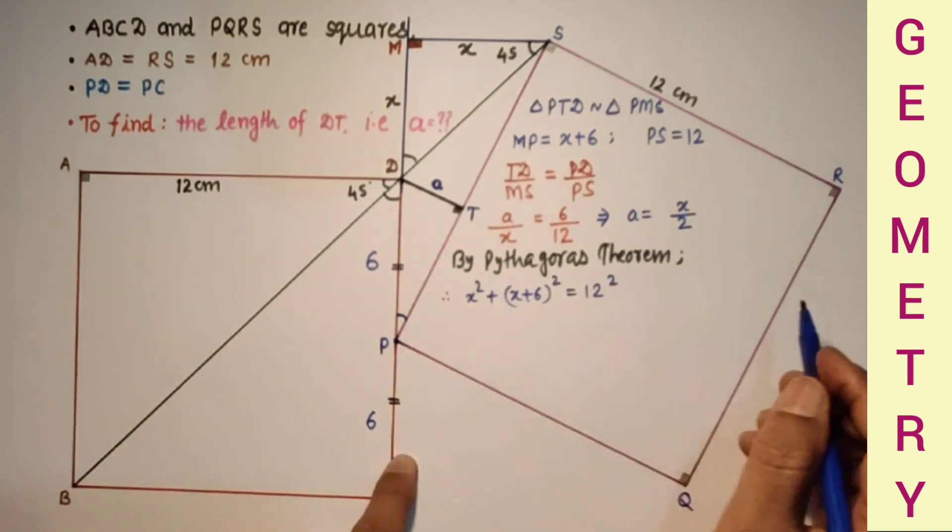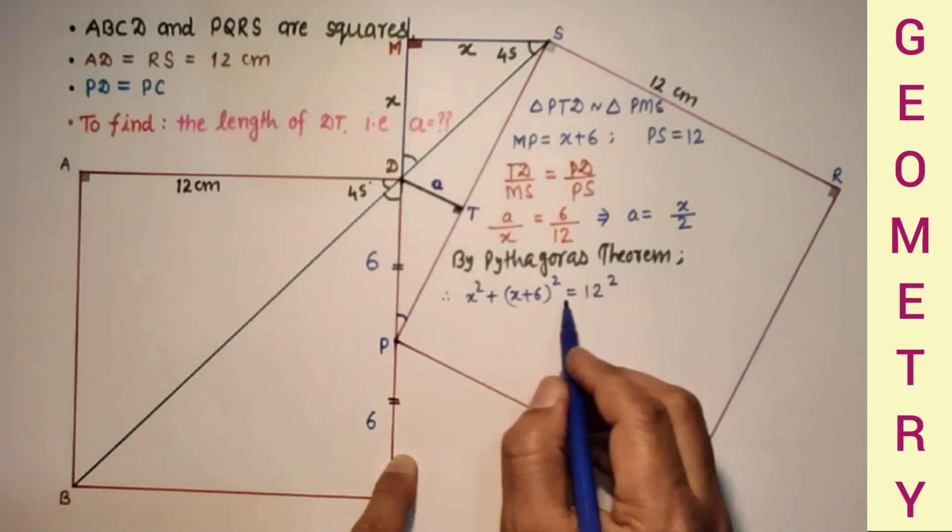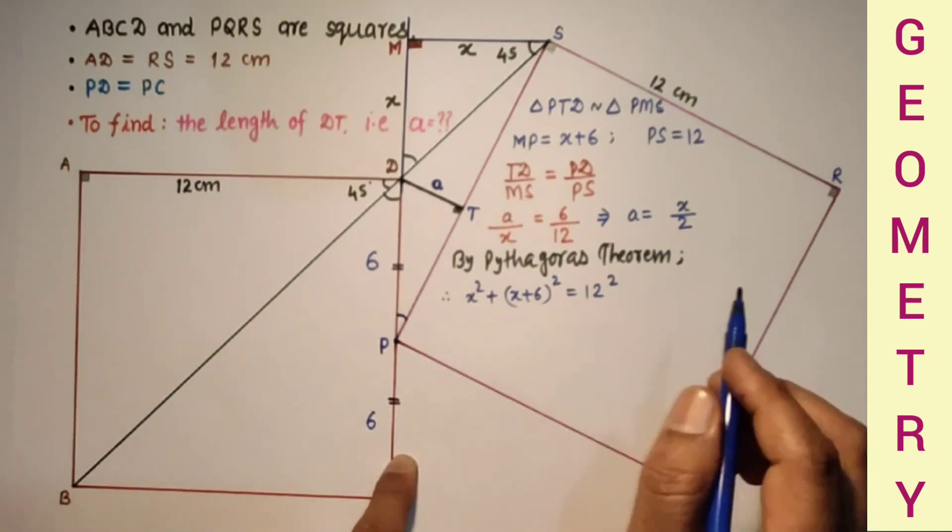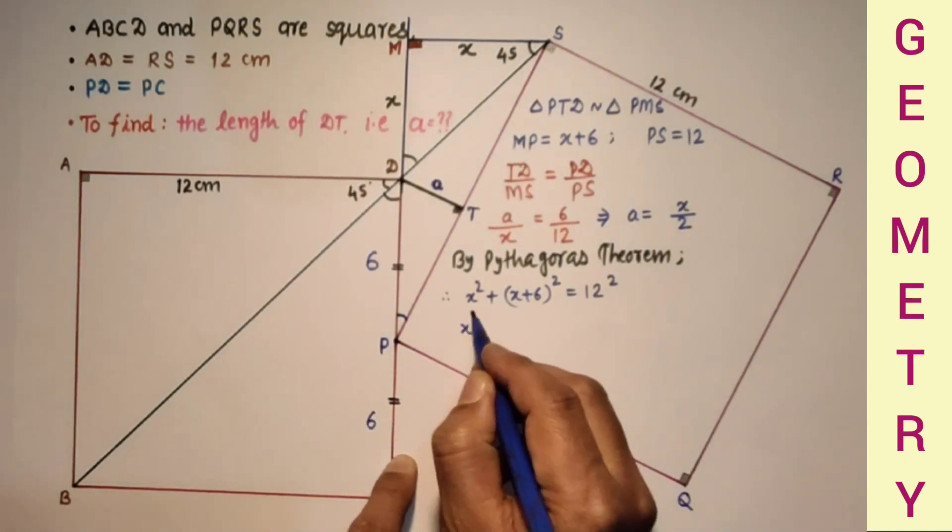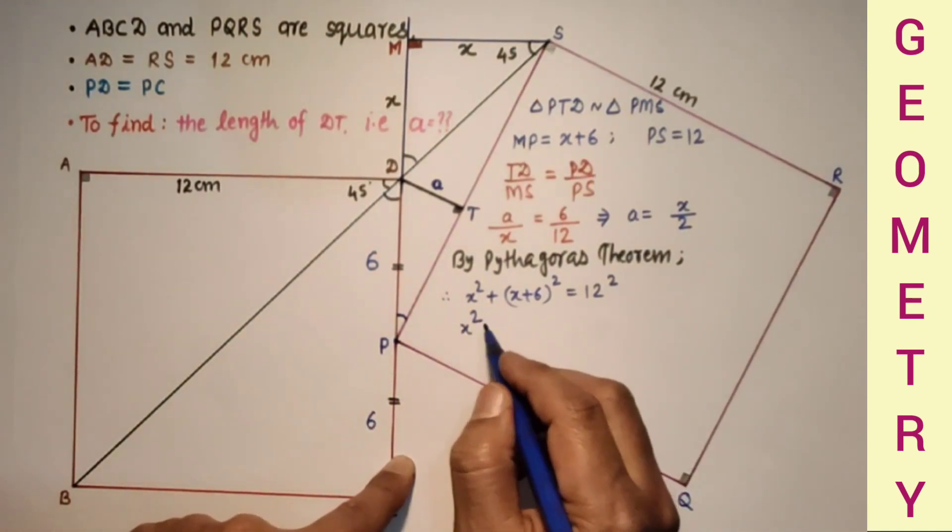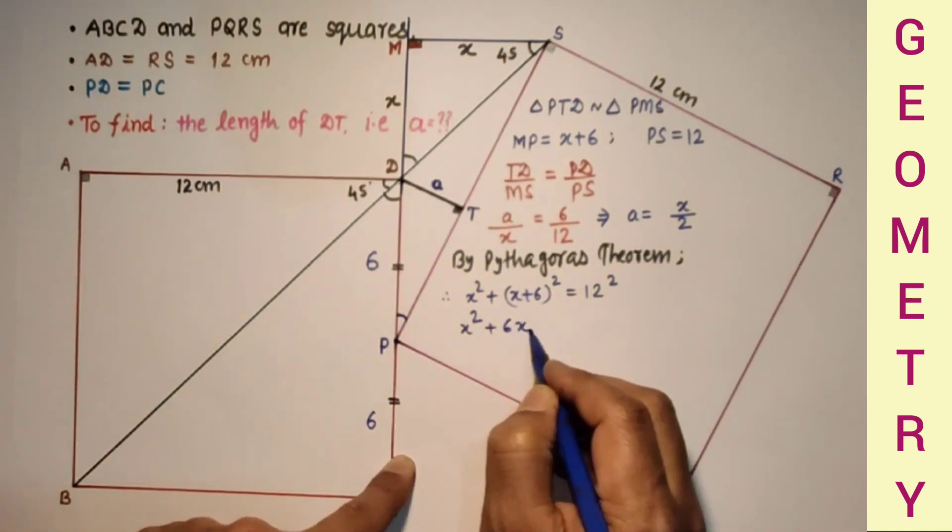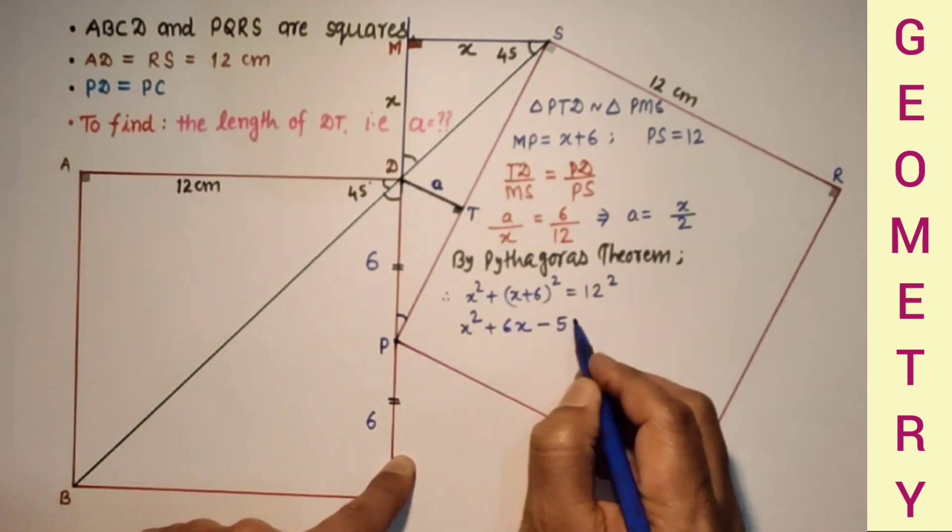If we simplify, 2X square plus 12X plus 36 is equal to 144, and then divide by 2. We will get X square plus 6X minus 54 is equal to 0.